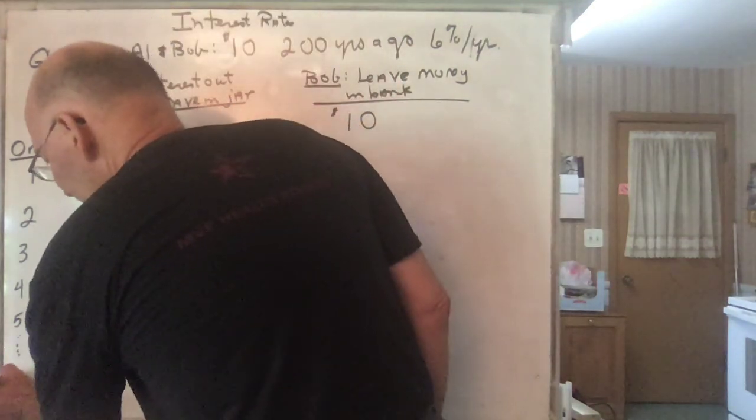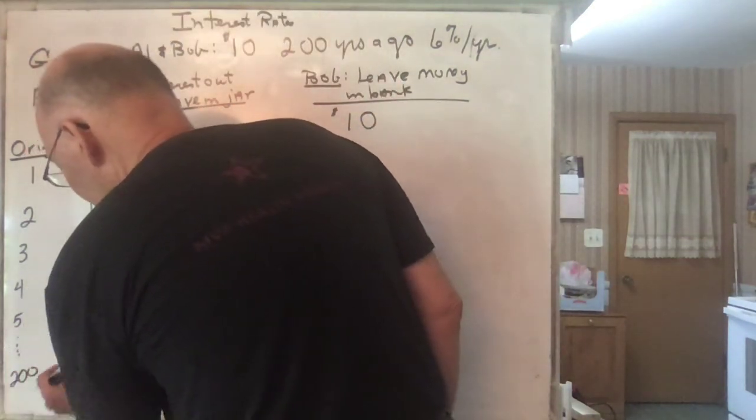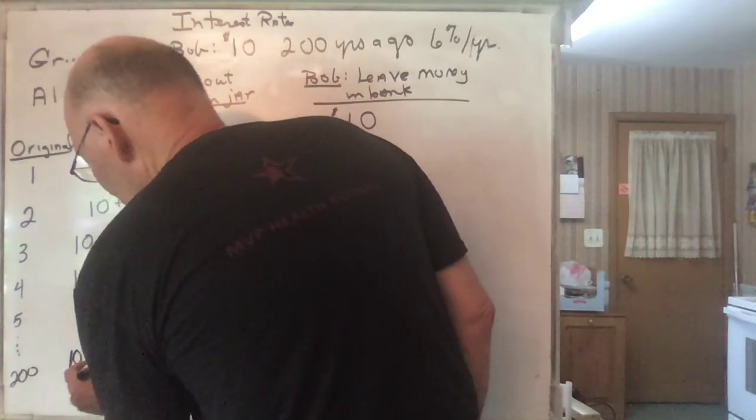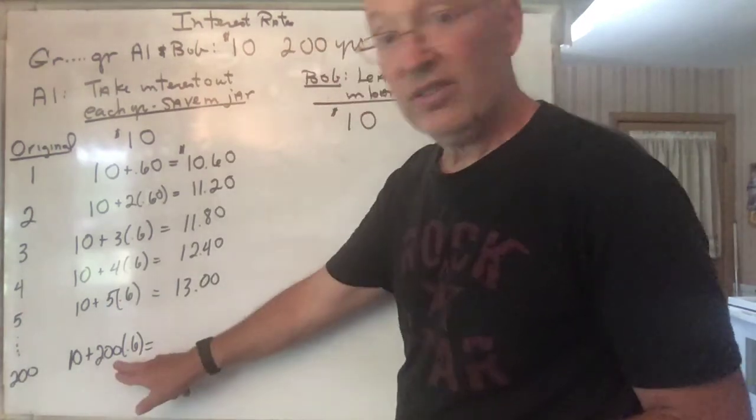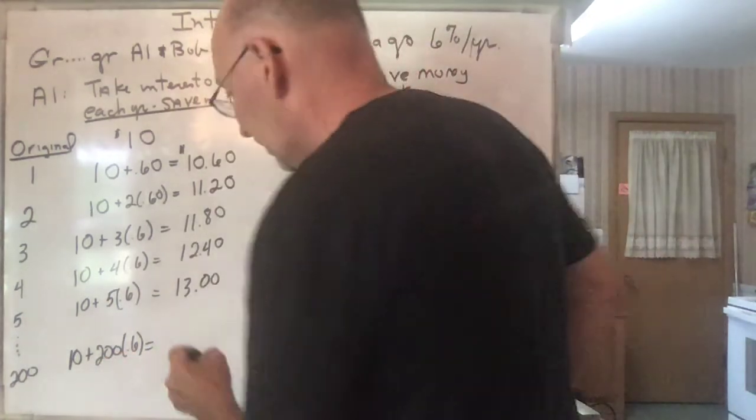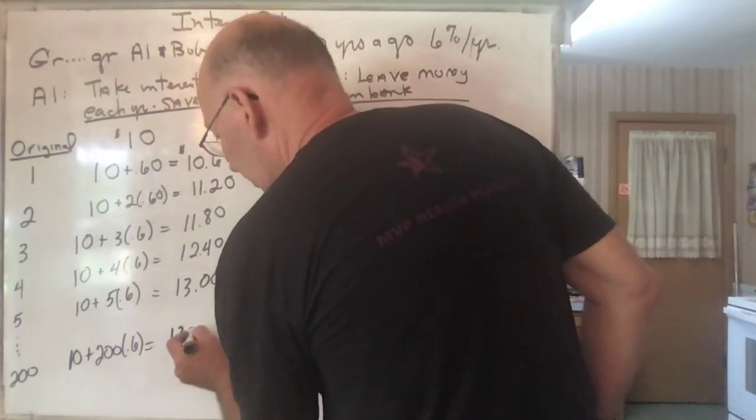And let's go all the way down. At the end of 200 years, it's going to be $10 plus 200 times $0.60, and 200 times $0.60 is $120 plus $10, which is going to be $130.